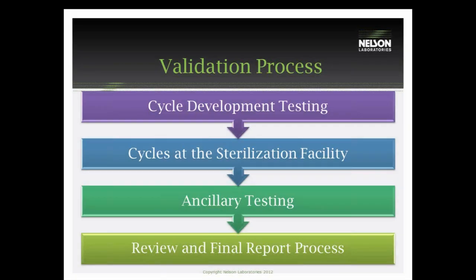This graph shows a little bit of how that process works in the chamber. For the validation process, we will typically do cycle development testing, which will evaluate the device as well as process challenge devices chosen for the validation process. That is followed by half and full cycles at the sterilization facility, all the ancillary testing, and the review and final report process. This process can take anywhere from four to five months.